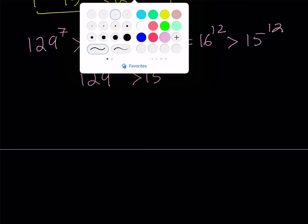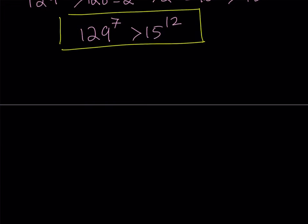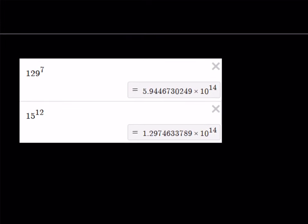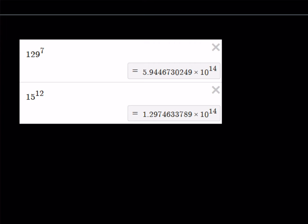Now, even though this brings us to the end of the video, I'd like to show you what these numbers look like. When you look at these numbers, actually, they are pretty close. Check it out. 129 to the 7th power: 5.9446 times 10 to the 14th power. And 15 to the power of 12 is 1.2974633 times 10 to the 14th power. So they have the same number of digits. One of the numbers is roughly five times the other number. That kind of tells me maybe there's another way. Obviously, there's more than one way to do this.